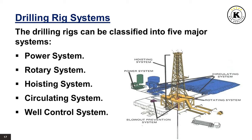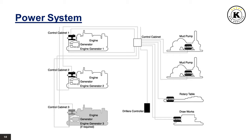Power System. The power system on a drilling rig provides power for the other main systems on the rig and ancillary systems such as electrical systems and pumps. The system typically consists of a prime mover — the component that generates the raw power — and a means to transmit that raw power to the end-use components on the rig.